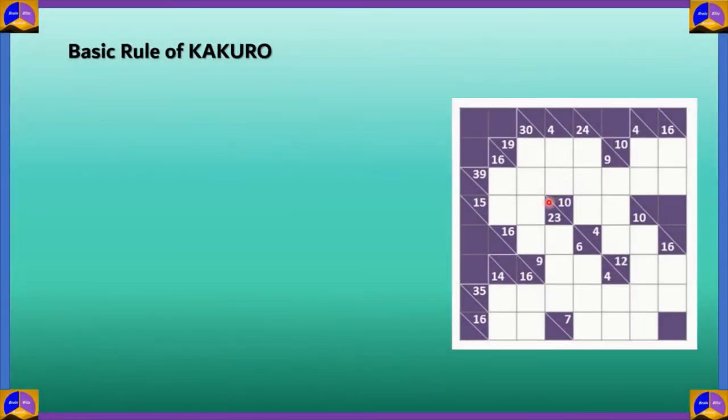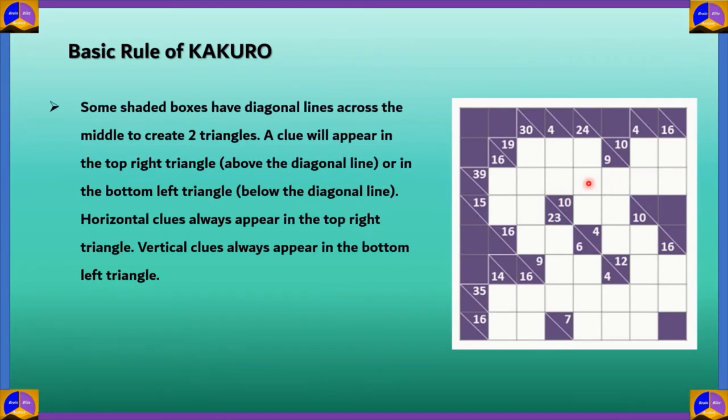Moving on to some other basic rules of Kakuro. Some of these shaded boxes have diagonal lines across the middle to create two triangles. Like for this block, here you can see you have 19 on the top and 16 on the bottom, and there's a diagonal line dividing this square into 2. A clue will appear in the top right triangle, and that clue, which is above the diagonal line, is a horizontal clue.